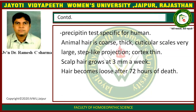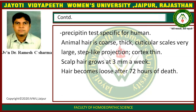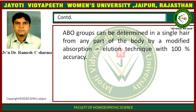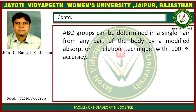Precipitin tests are species-specific for human hair. Animal hair is coarse and thick, with very large step-like cuticular scale projections. Scalp hair grows at 3 mm per month. Hair becomes loose after 72 hours of death. ABO blood groups can be determined from a single hair from any part of the body using the precipitin absorption and elution technique with 100% accuracy.